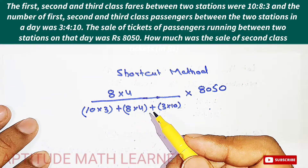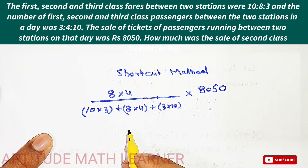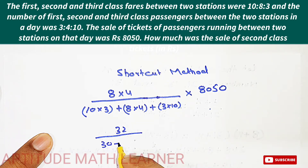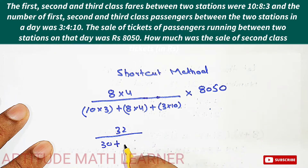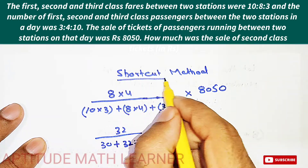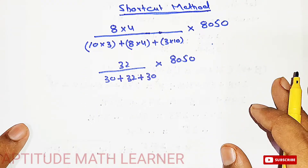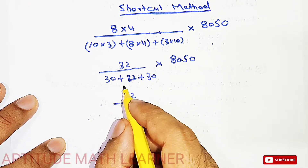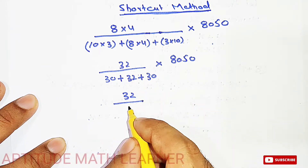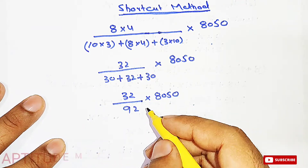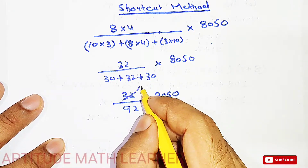Computing each product: 8 × 4 = 32 (second class), 10 × 3 = 30 (first class), and 3 × 10 = 30 (third class). So the formula becomes 32 upon (30 + 32 + 30), multiplied by 8050. The denominator is 92, giving us 32/92 × 8050.